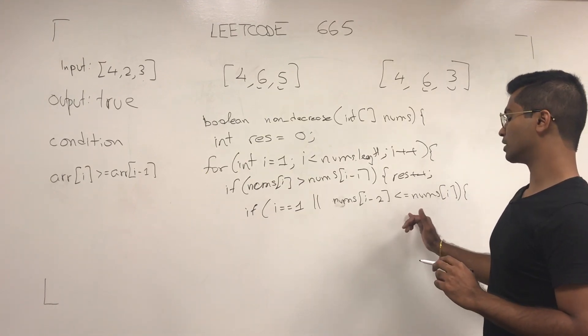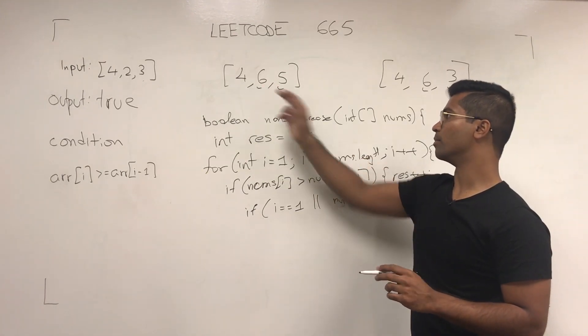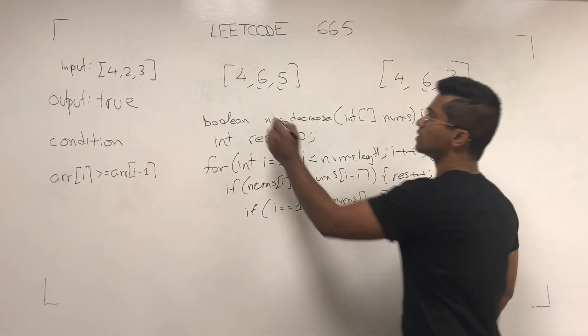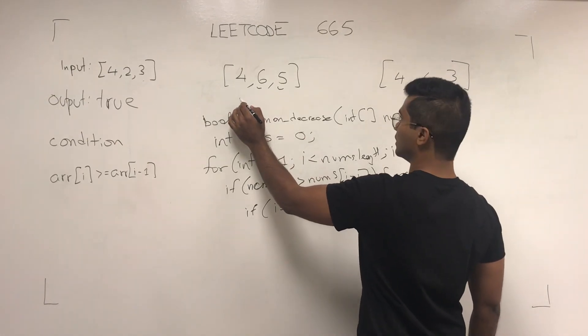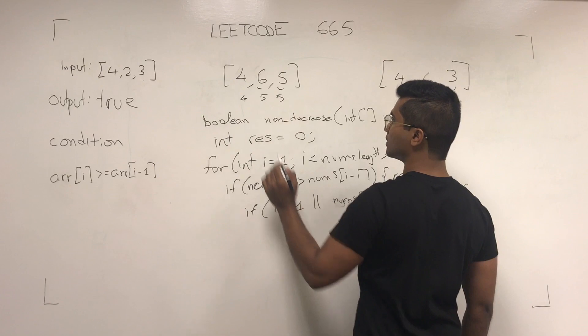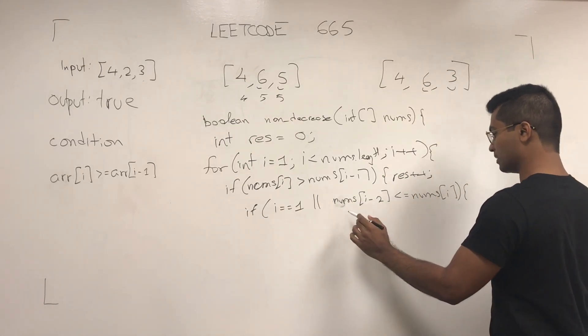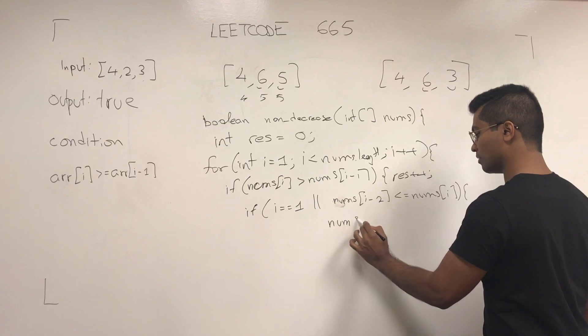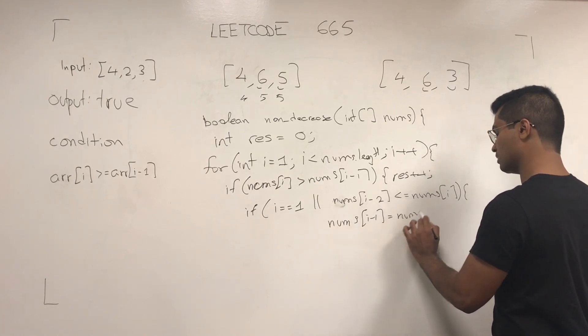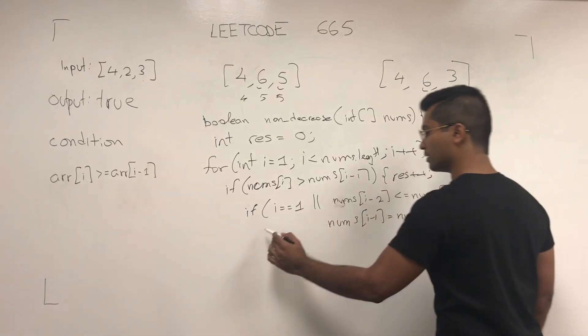we should be changing the one in the middle. So we need to make this equal to 455. So this needs to become nums of i-1 is set to nums of i.